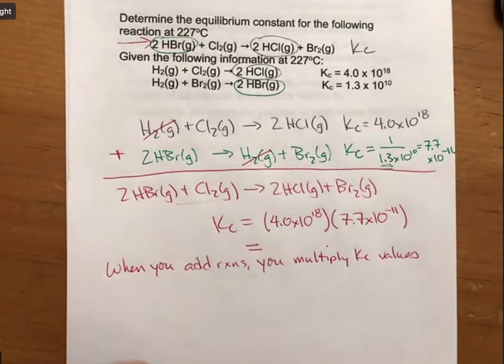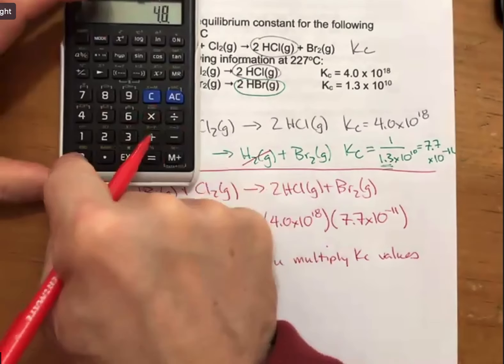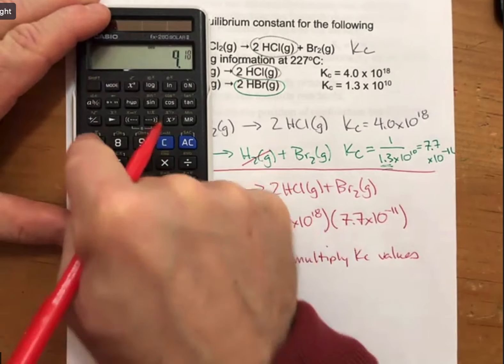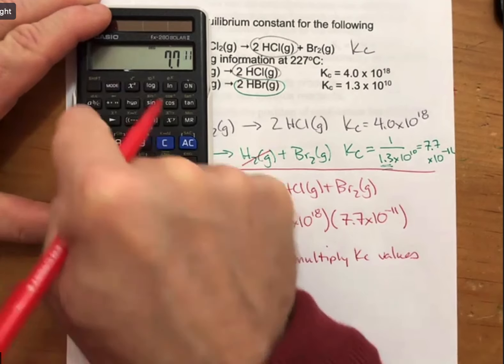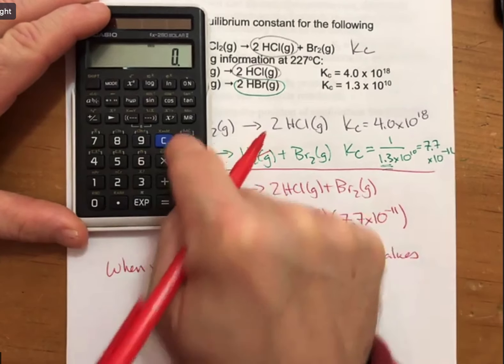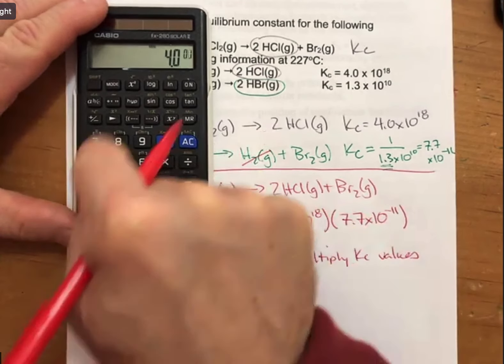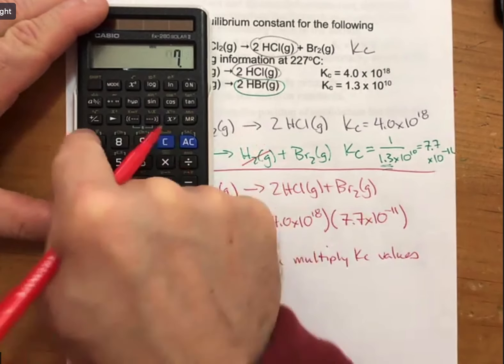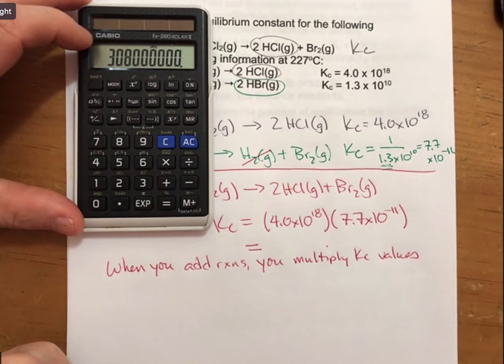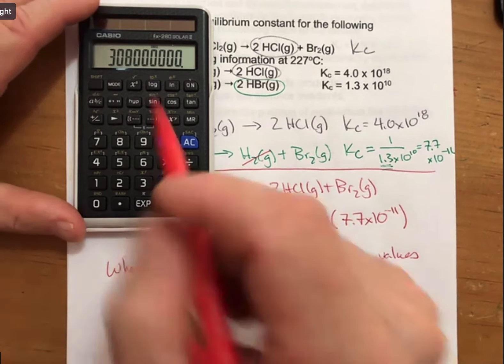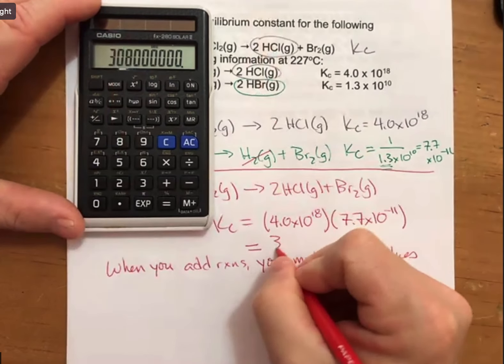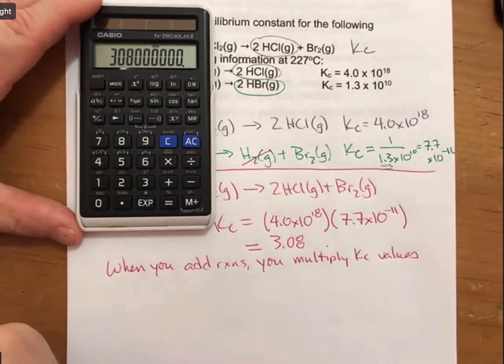When I multiply these two together, I get 4.0 times 10^18 times 7.7 times 10^-11. I get this large number, which my calculator will not put into scientific notation for me, so I'm going to count my zeros. 3, 6, 7, 8. That's 3.08 times 10 to the 8th.